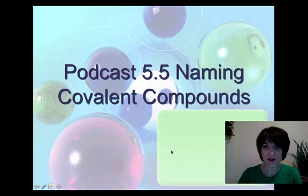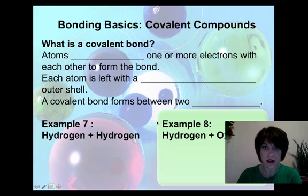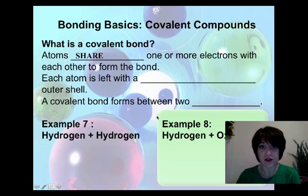Hi, welcome back to Chemistry. This is Ms. Gray. And today we get to work on naming covalent compounds. In our last couple of sections, we've been working on the naming of ionic compounds. So now we're going to look at the type of bond that forms when atoms share one or more electrons with each other to form the bond, rather than transferring the electrons.